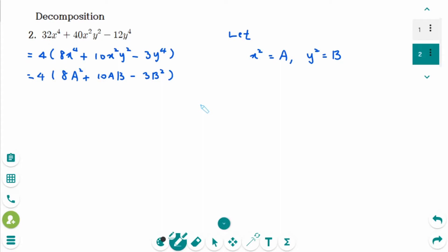And I will use decomposition. Find the two numbers that have a sum of 10 and the product of minus 24. The numbers are minus 2 and 12.